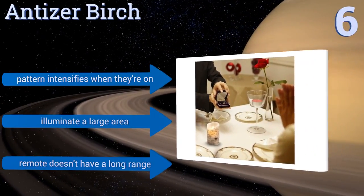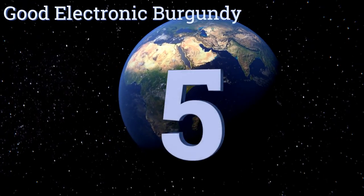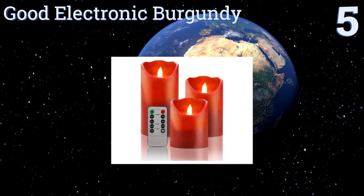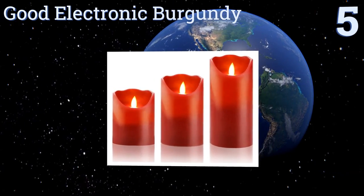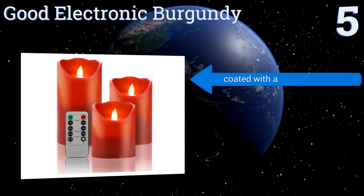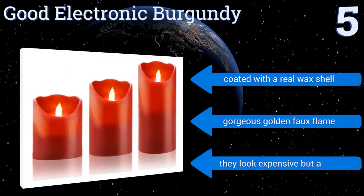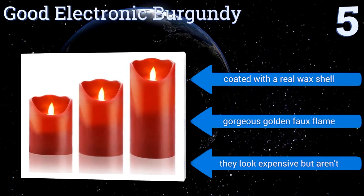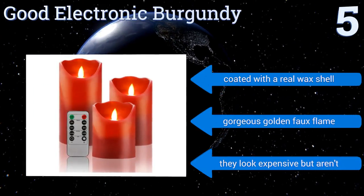However, the remote doesn't have a long range. Halfway up our list at number five, the Good Electronic Burgundy will probably become a staple of your holiday decorations collection as well as your Valentine's Day one. Plus, if you have several sets of these, you can conveniently set them all up to be controlled by a single remote. They're coated with a real wax shell and produce a gorgeous golden faux flame. They look expensive but they aren't.